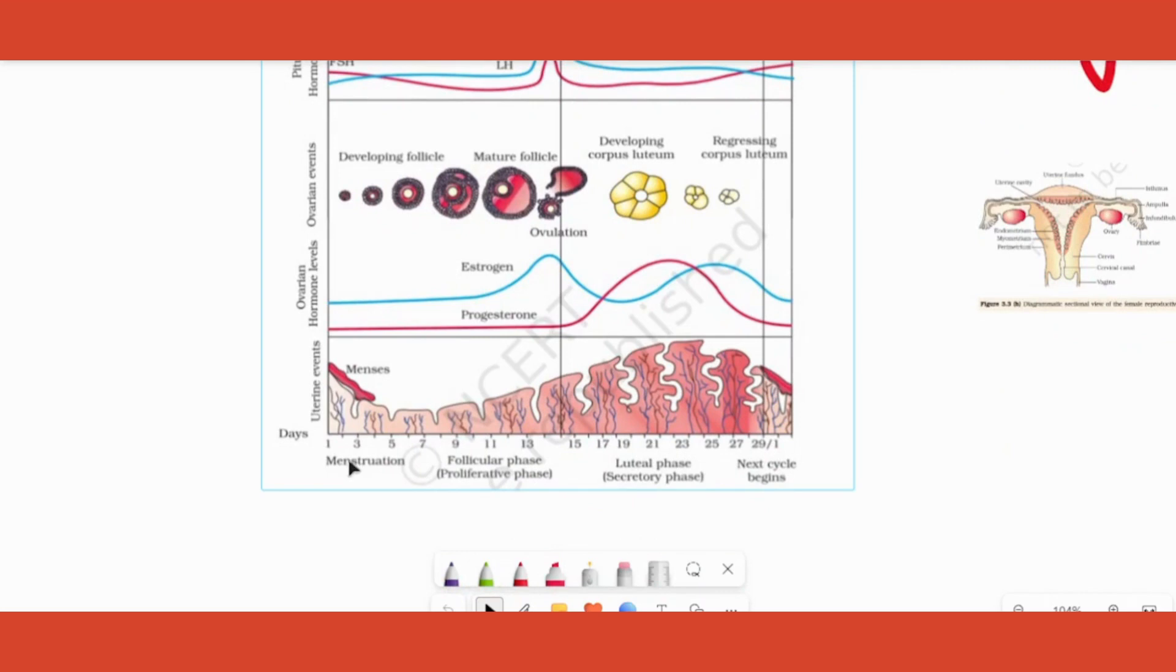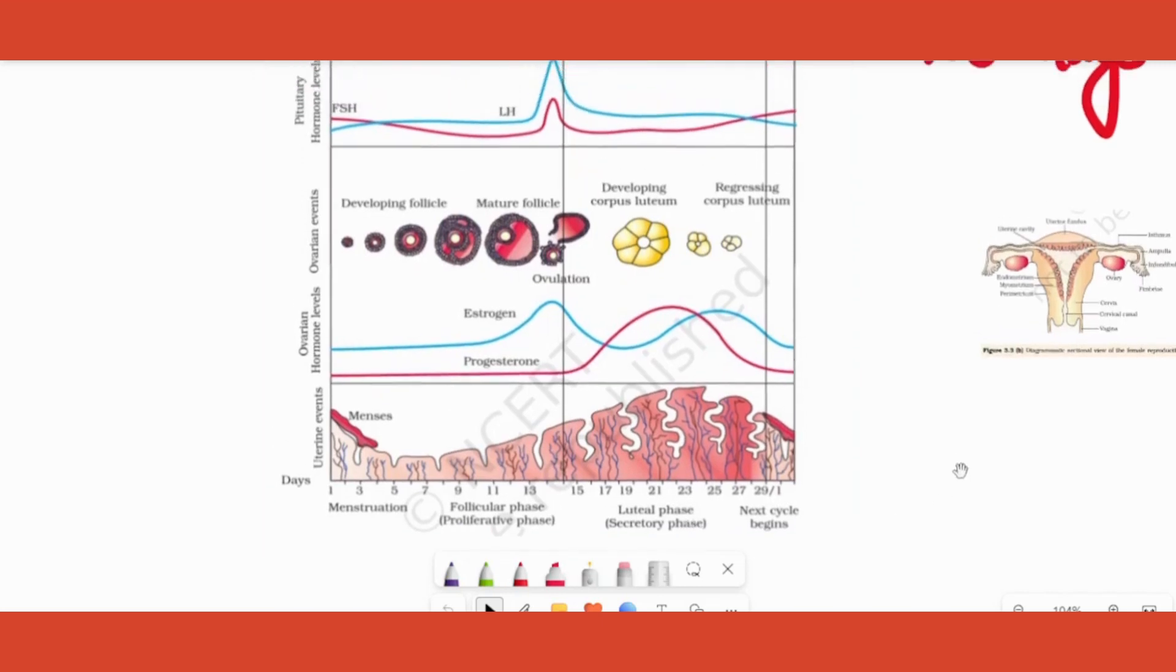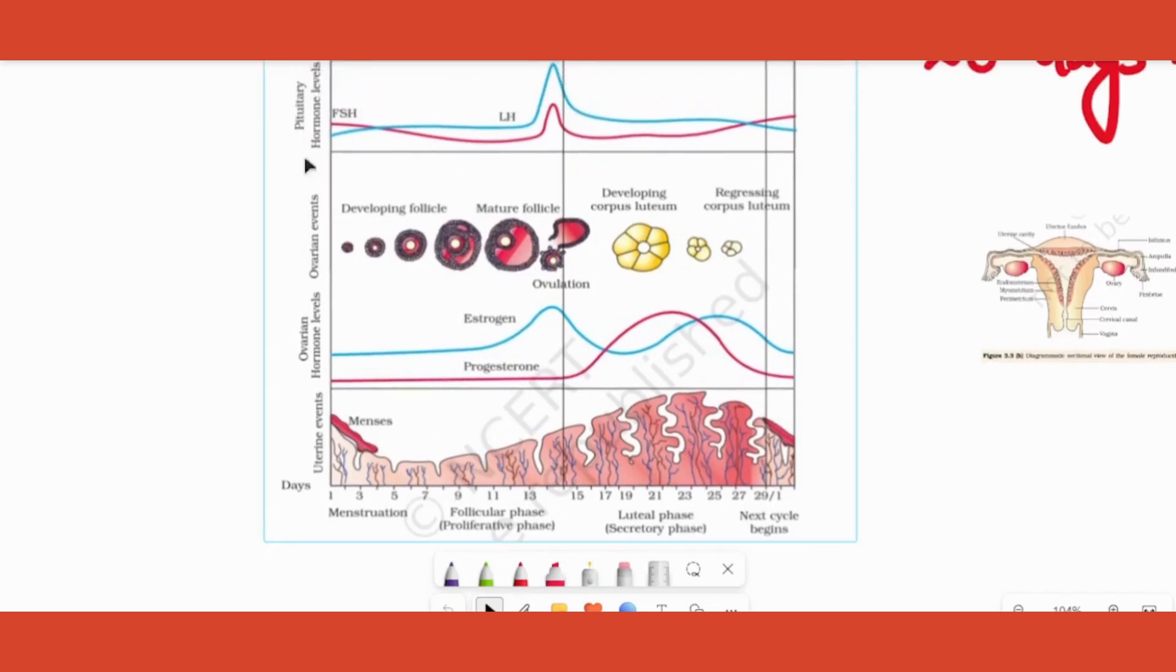In a menstrual cycle, like I already told you, it takes place in 28 days and we can divide that 28 days into certain phases. First phase is called menstrual phase, then follicular phase, then ovulatory phase.